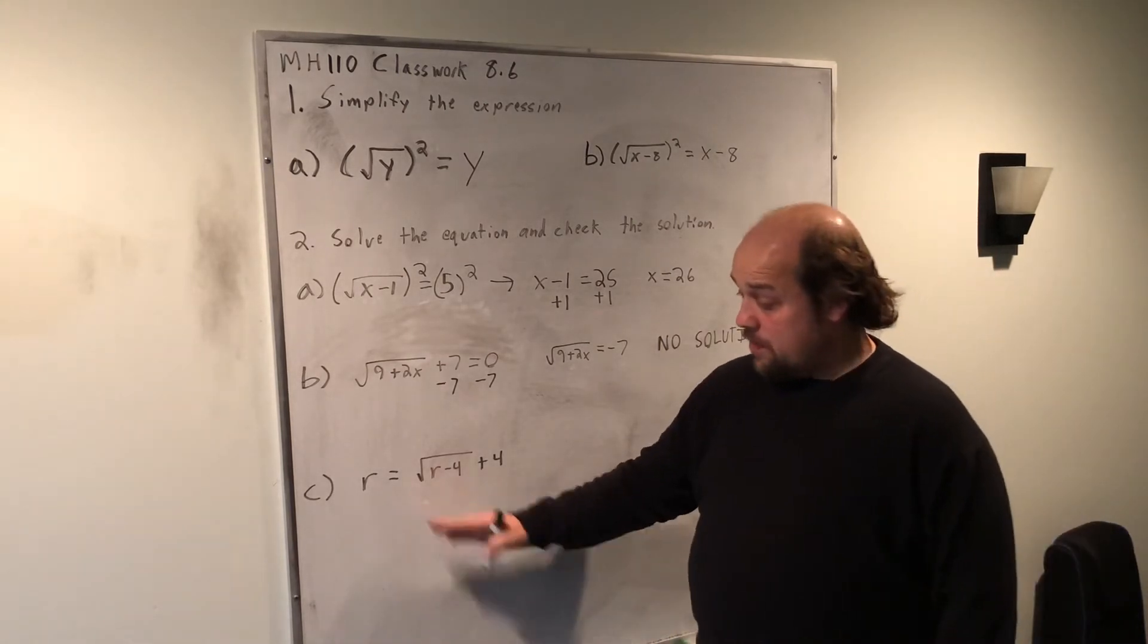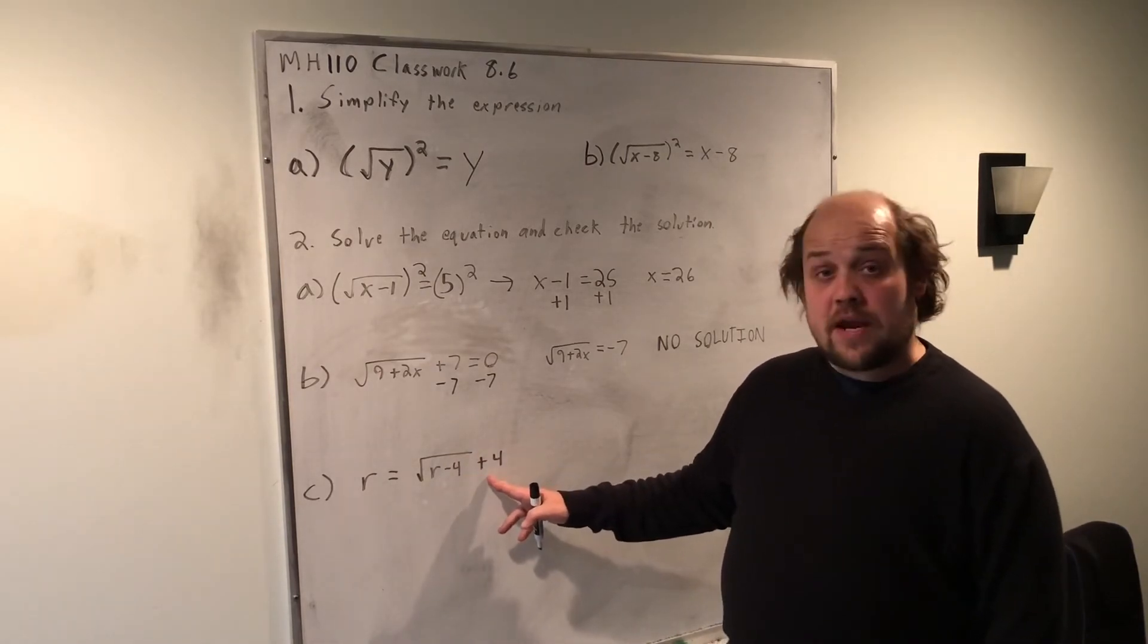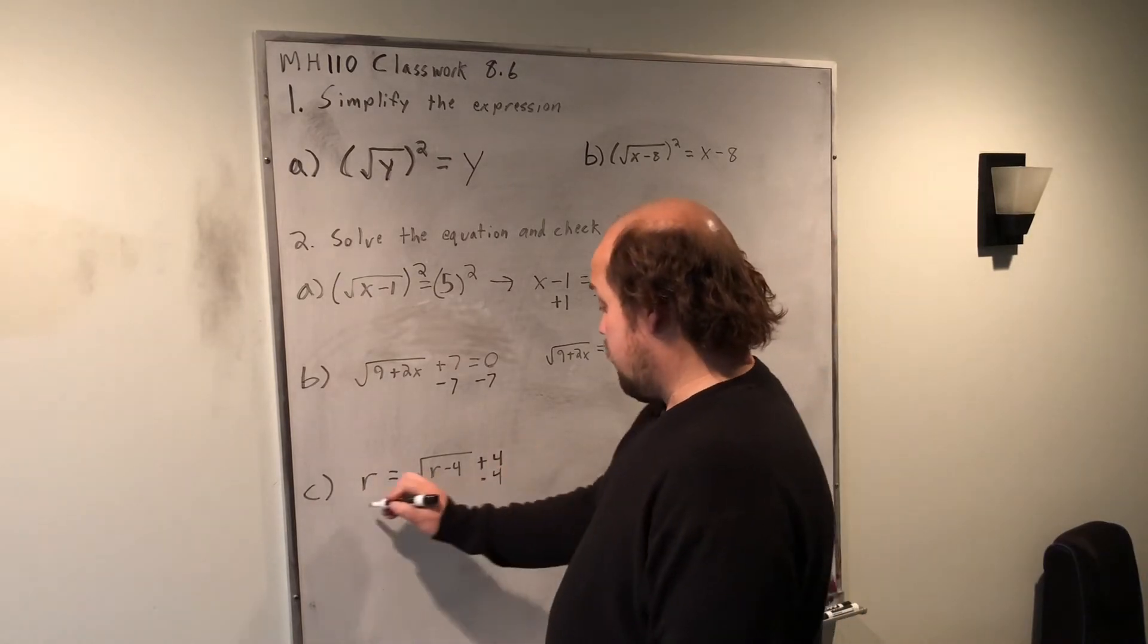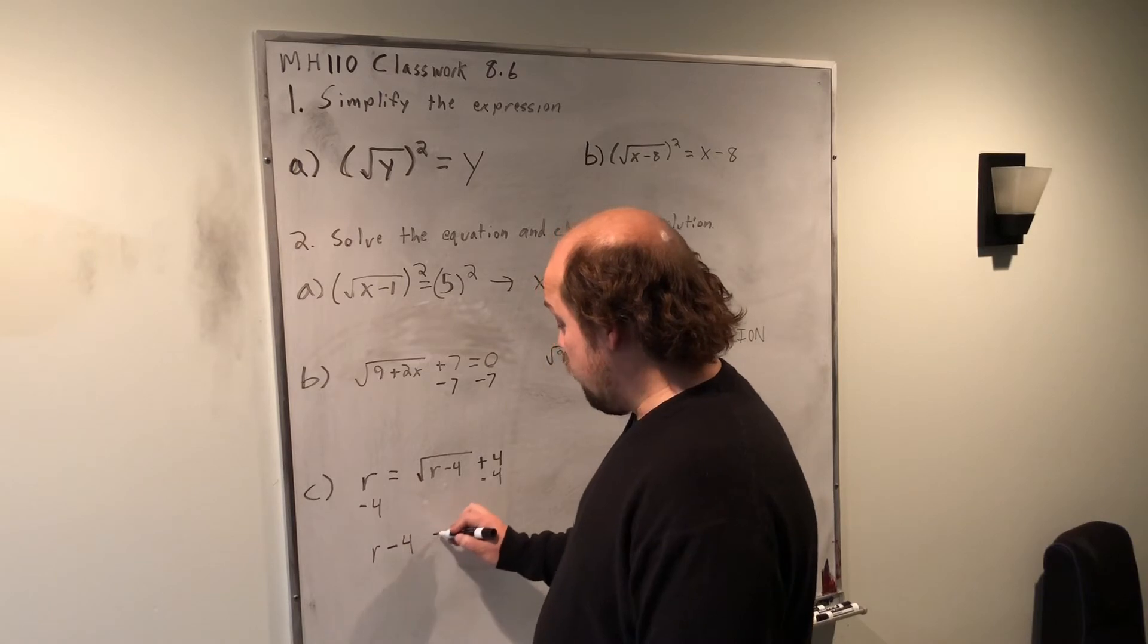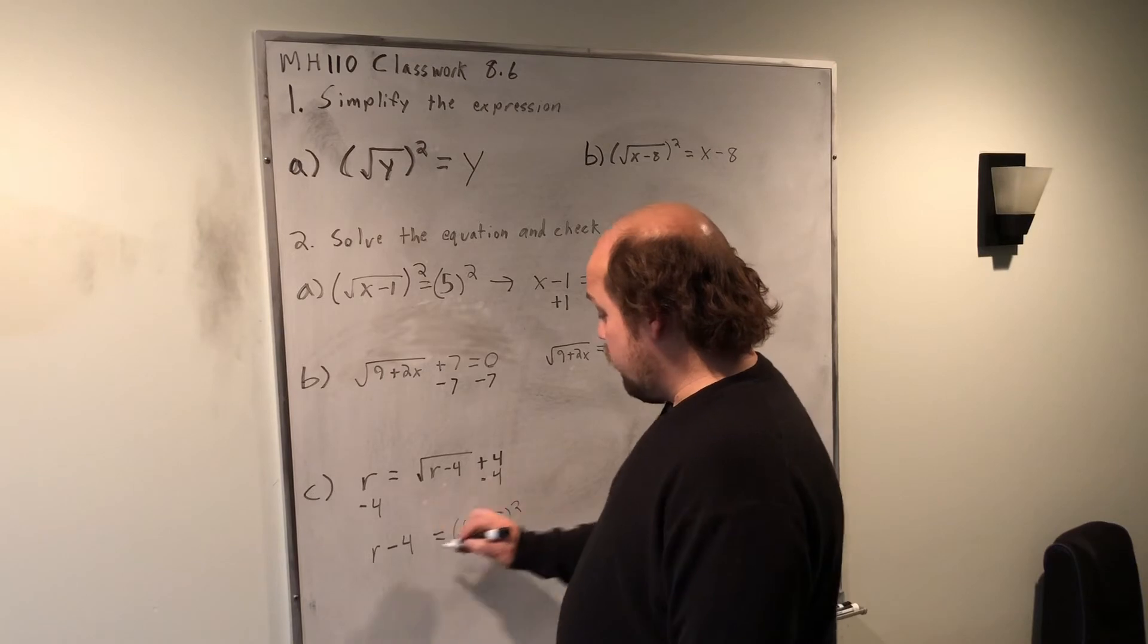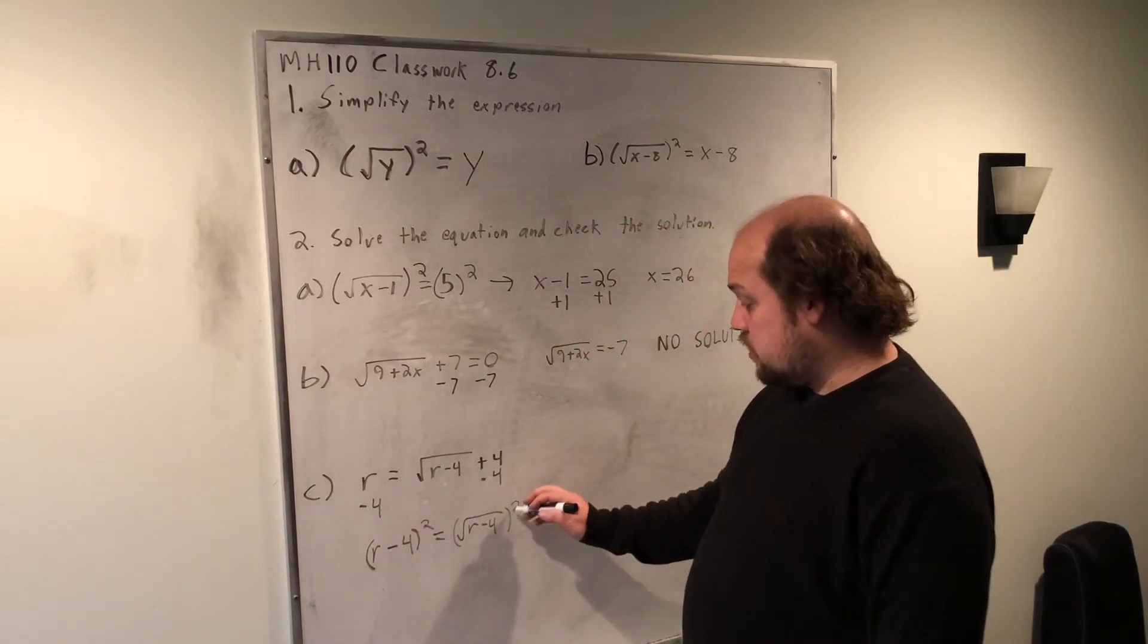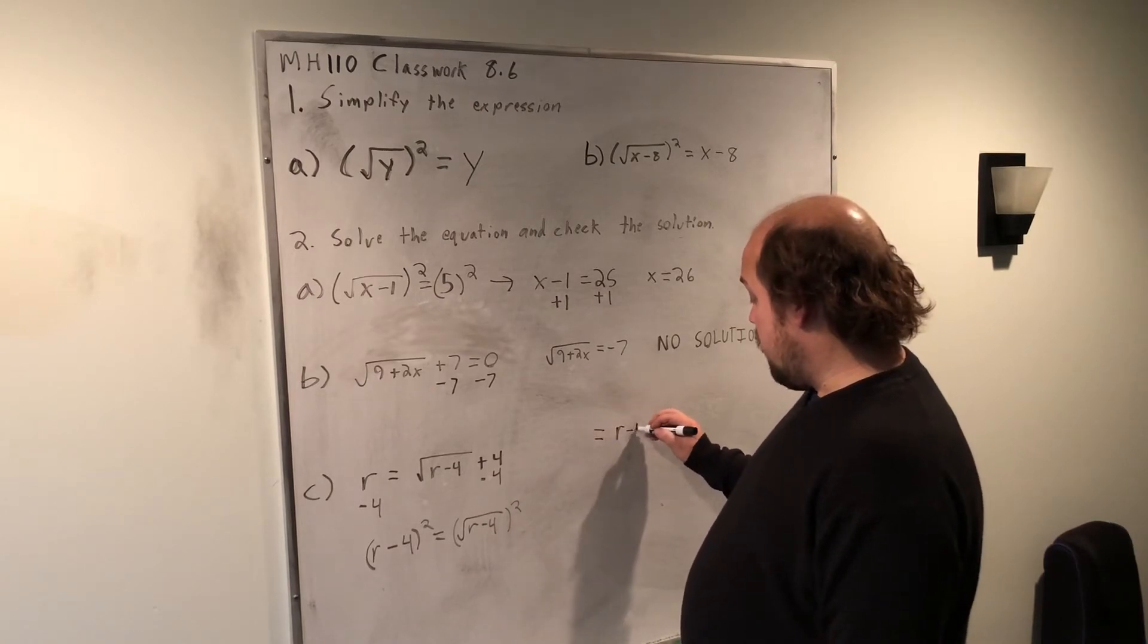For this bottom problem, I have the root with a positive 4 right now. To get the root isolated, I'm going to subtract 4 from each side. That's going to give me the equation r minus 4 equals the root of r minus 4. If I now square both sides to undo that root, when I square this side, the squared and the root both go away, and just leave me with r minus 4.